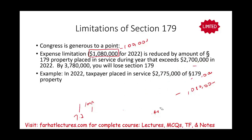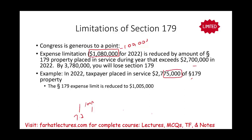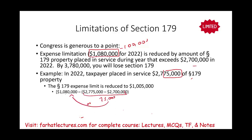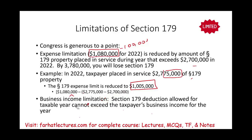There is a second limitation called the business income limitation. Section 179 allowed for a taxable year cannot exceed the taxpayer's business income. So the maximum you can take is $1,005,000 in that prior example, as long as you have business income of at least $1,005,000. If your business income is less, you are further limited. We'll look at examples to illustrate.